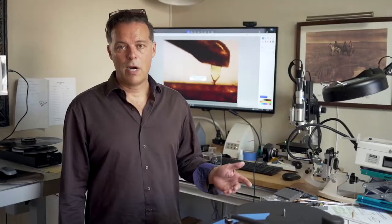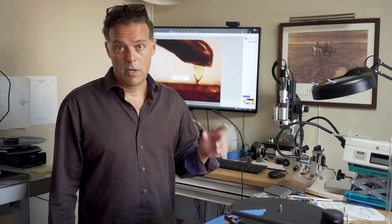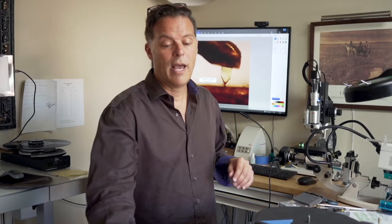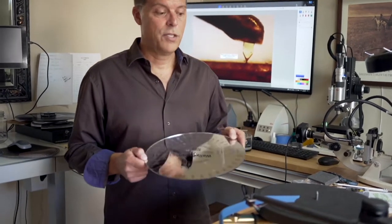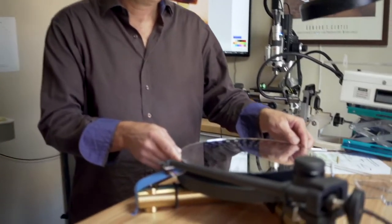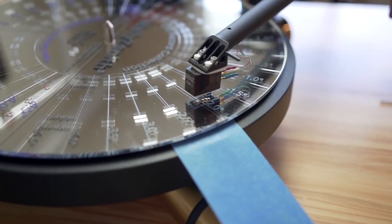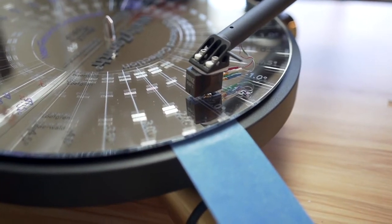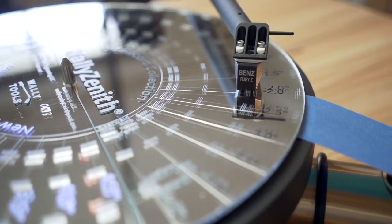So if your cartridge analysis determines that your cartridge has one degree or more of zenith error, then for the alignment of the cantilever, you'll want to use the Wally Zenith to do so. Simply identify from your report which radial line to use and align your cantilever to that line.